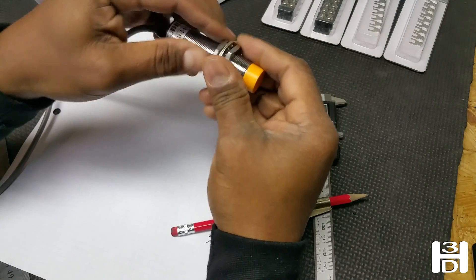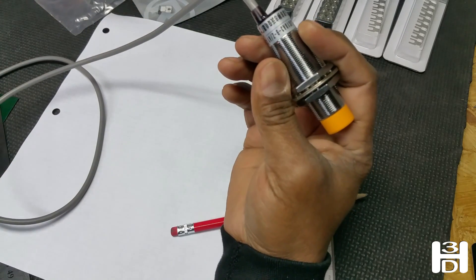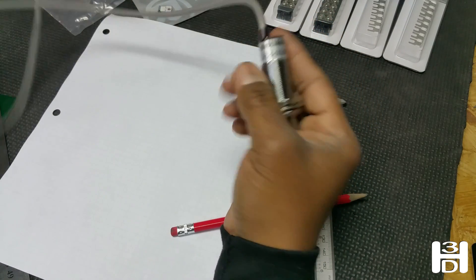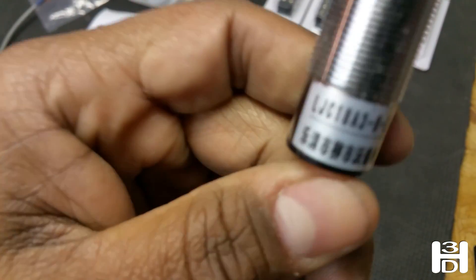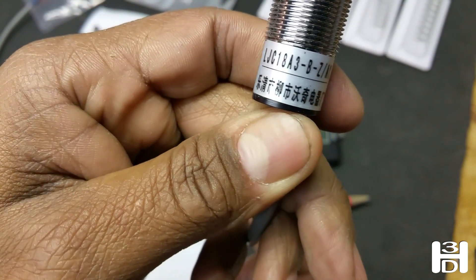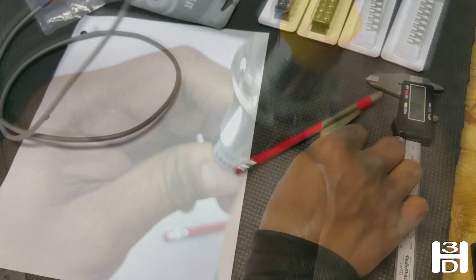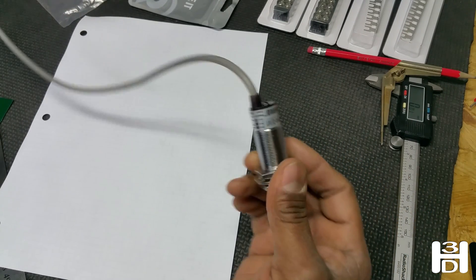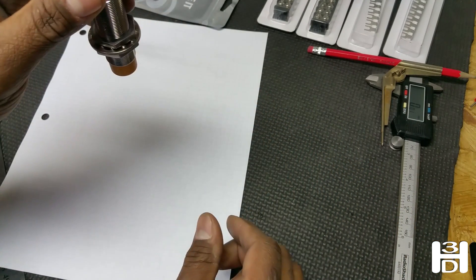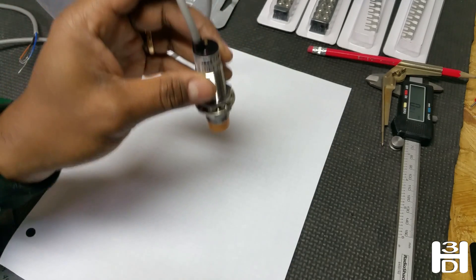Okay, for auto bed leveling we'll need to have a sensor. We'll use a capacitive sensor because we have a glass print surface. First thing we're going to do, and this will help save some time later on when we're trying to determine our X and Y offsets for the sensor versus the extruder tip, get a sheet of graph paper or any paper.